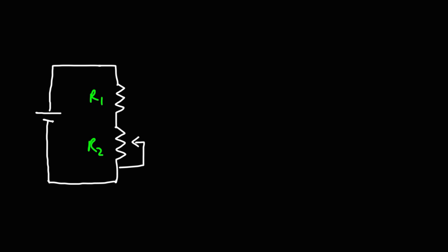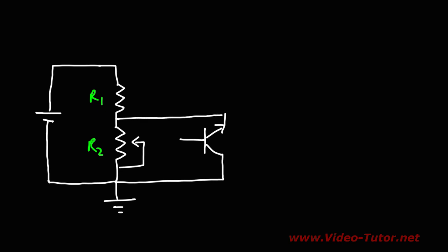I decided to do an experiment where I varied the voltage until the transistor began to conduct in the reverse direction. First, I needed to set up a voltage divider using two resistors — resistor 1 and resistor 2, where R2 is a potentiometer. That way I can progressively adjust the voltage by tuning R2. The collector pin of the transistor will be attached to ground, and the emitter will be connected between R1 and R2. I used a 12 volt battery for this experiment.